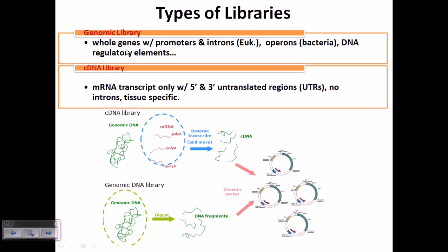The genomic library represents the whole genome including promoters, introns, and operons in case of bacteria. The cDNA library, on the other hand, represents only mRNA transcripts with the 5' to 3' untranslated regions (UTRs). There are no introns in cDNA libraries, and they are tissue specific. cDNA libraries represent the mRNA of a eukaryotic system at a particular time inside a particular type of cell or tissue.